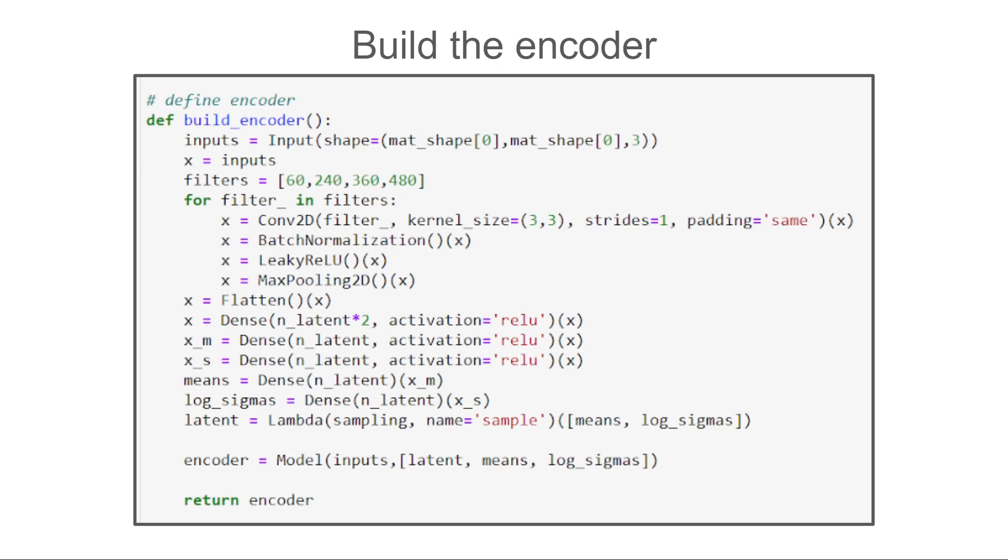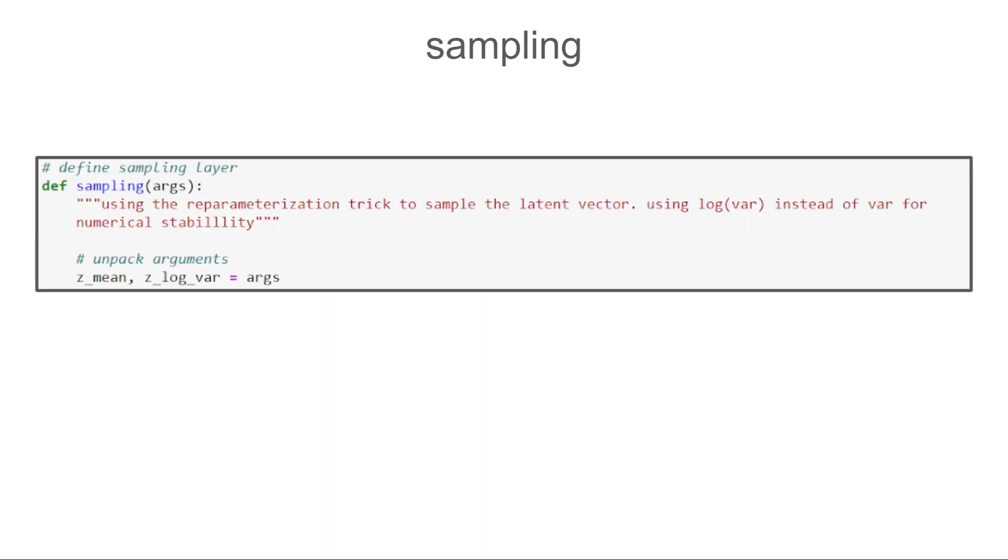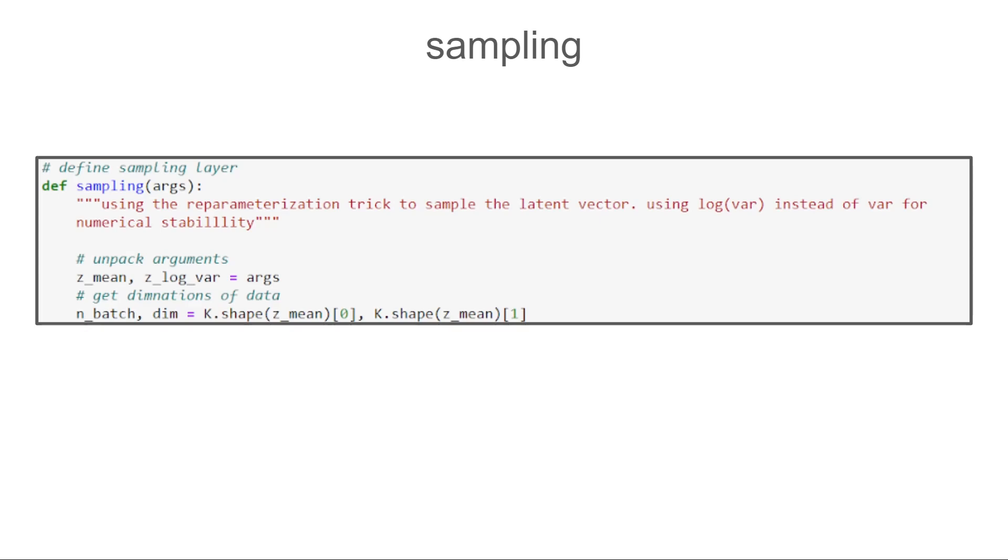Here you can see the sampling function. Please note that all of the mathematical operations that we use here are implemented using Keras functions, not NumPy. This is important because this way Keras knows how to combine these operations in the graph, which allows it to perform backpropagation. We start by unpacking the means and variances vectors. We get the dimensions of the data so we later know how much points we need to sample. Then we sample from a standard normal distribution.